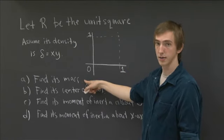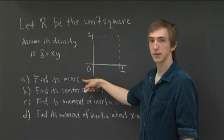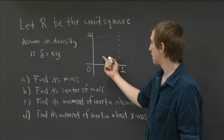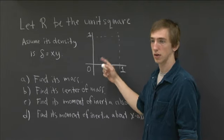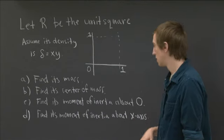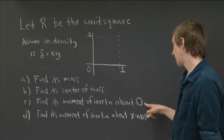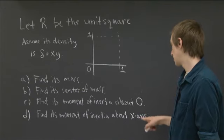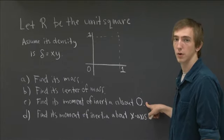We want to use this density function to find various physical characteristics of this region. First, we want to find its mass, so we're going to need to recall how you get mass from density. We want to find the center of mass, where we could balance this if we cut it out and tried to balance it on our fingers. We want to find the moment of inertia about the origin and the moment of inertia about the x-axis.